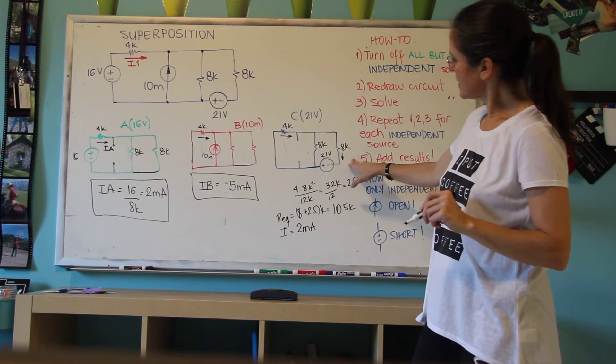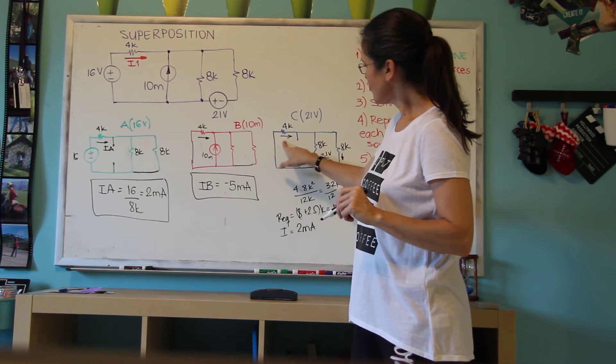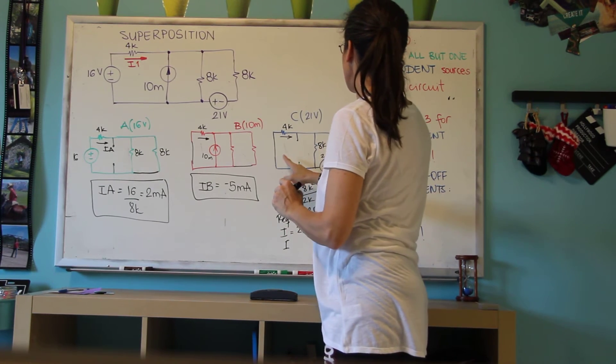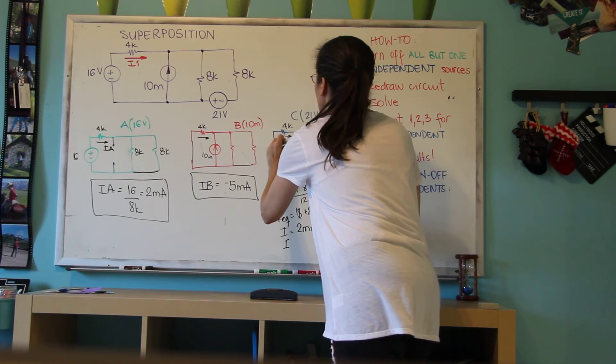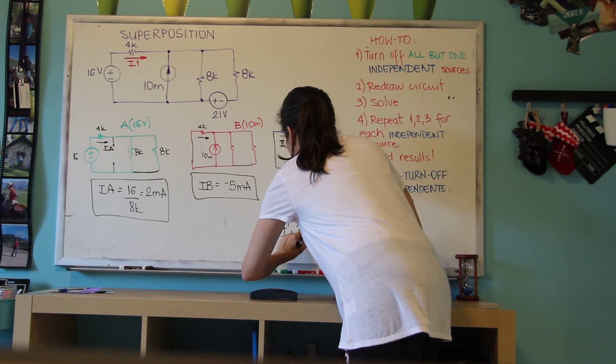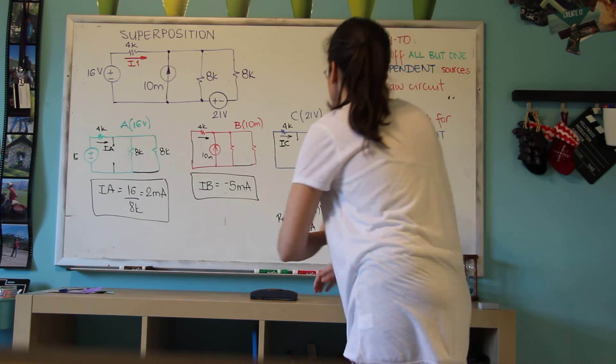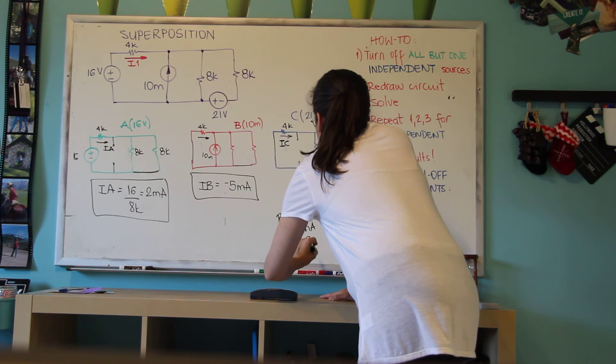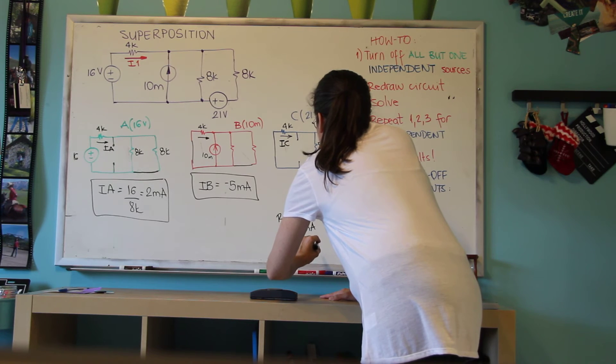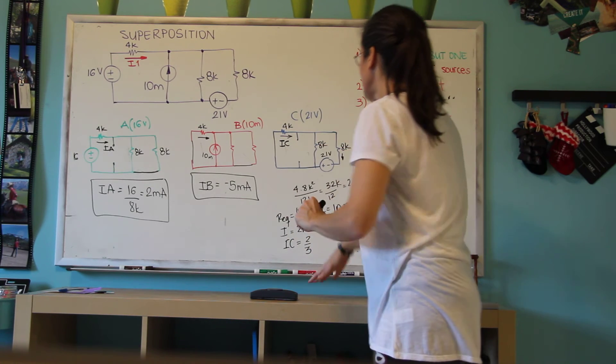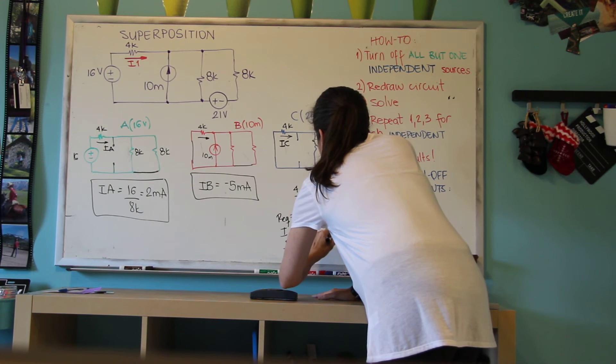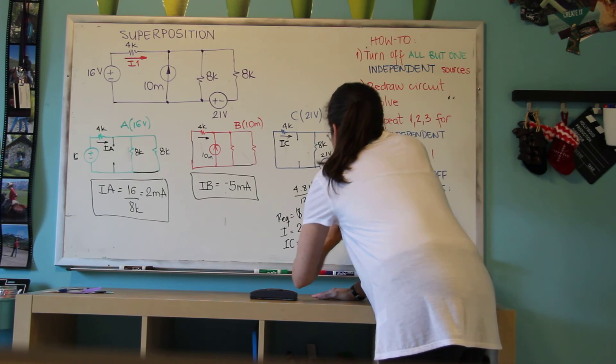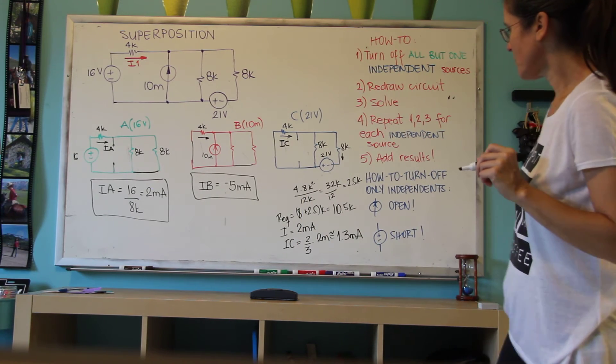So these 2 milliamps are going to divide up in 2 to 1. So IC will be 2 thirds of, is that true? 8 divided by 12, yes. That's 2 thirds of 2 milliamp, which is 1.3 milliamp approximately. 4 divided by 3.